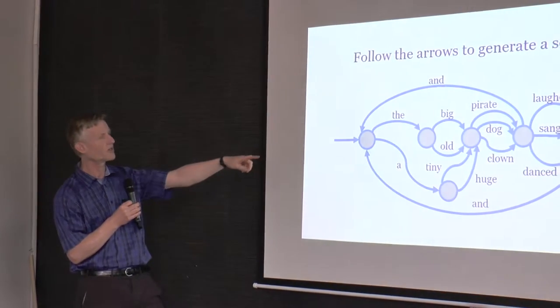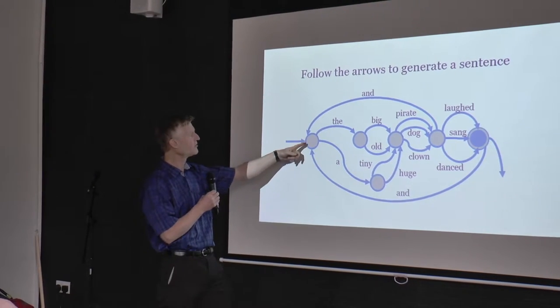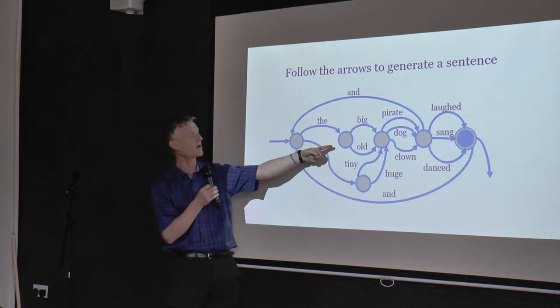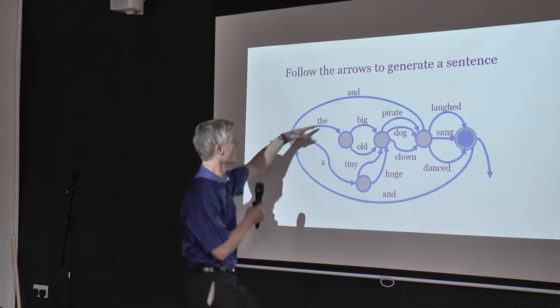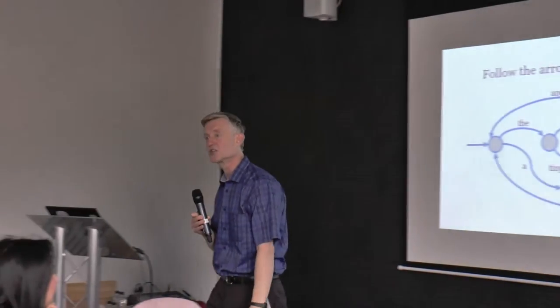Here's another example, to do with crossover into other subjects — English, actually. This is a sentence generator. The rules are: put your finger on the diagram and follow any arrow, but you must say the word. So: 'the old clown laughed' and 'a tiny pirate' and 'the big clown sang.' It's a sentence generator, and it's not long before children start writing their own diagrams — usually to generate rude sentences. They start reverse engineering the laws of English grammar. Of course, you and I know this is just a finite state machine, and the very same diagrams could describe the behaviour of an incomprehensible microwave oven. It's a common pattern that explains things from the grammar of English to how a microwave works.